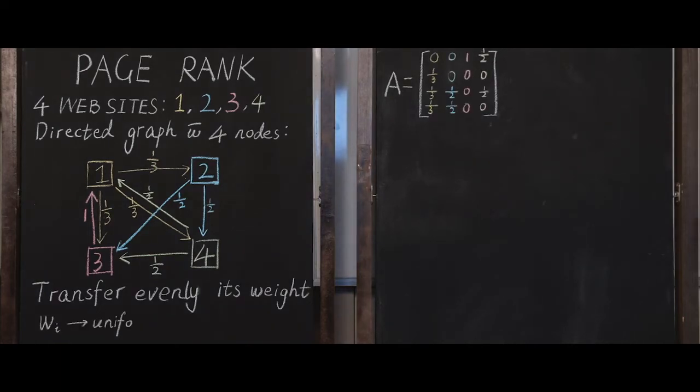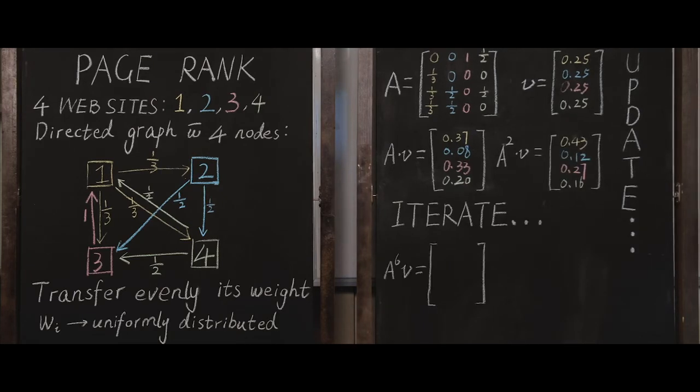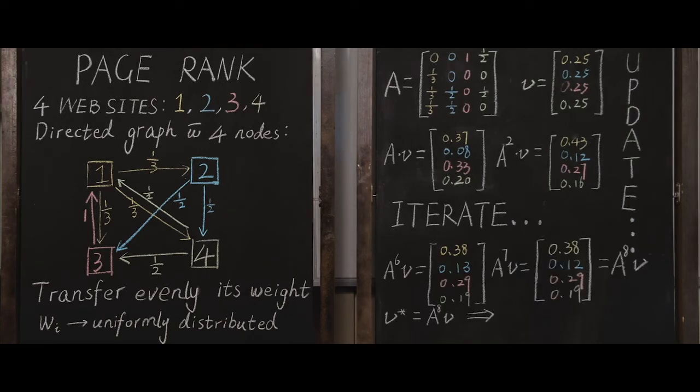Suppose initially the weight is uniformly distributed, and we denote V, the initial rank vector. We update the rank by adding the current value with the importance of the incoming links, which is the same as multiplying the matrix A with V. We can then iterate the process, and we notice that A to the power of K times V tends to approach an equilibrium value, the page rank vector.